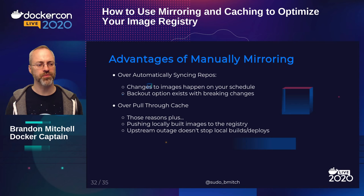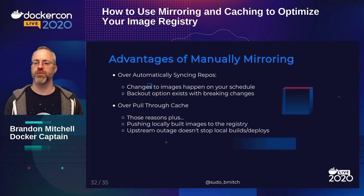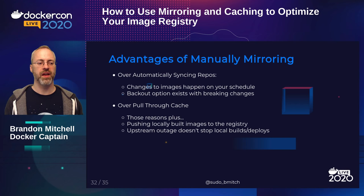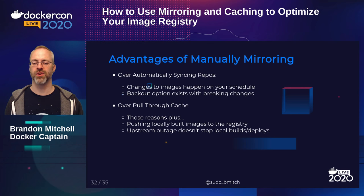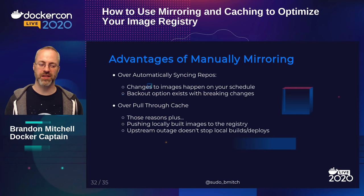Compared to a pull-through cache, mirroring also lets you push your own locally-built images into the same registry, giving it dual use as both a mirror and a local registry for deployments. Most importantly, you're no longer dependent on external resources during builds — only the mirroring update step touches the outside world, and if that step fails, you still have your existing mirror to keep running.